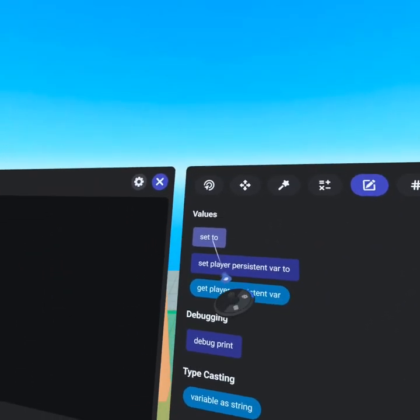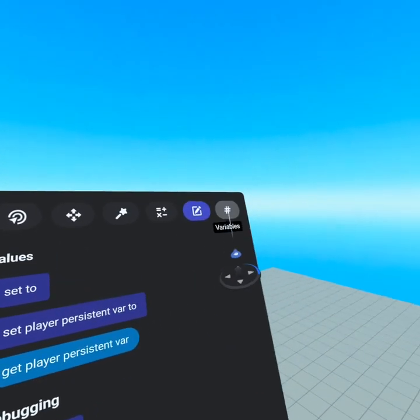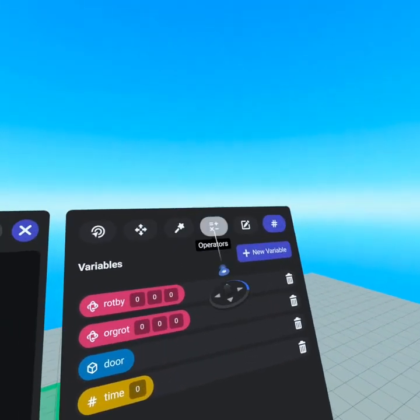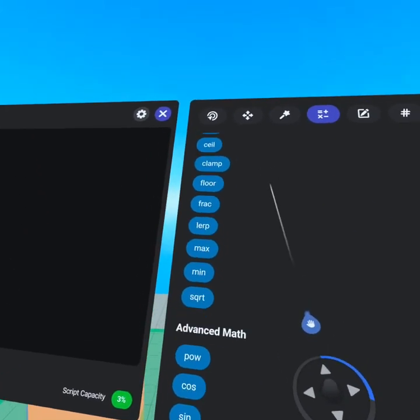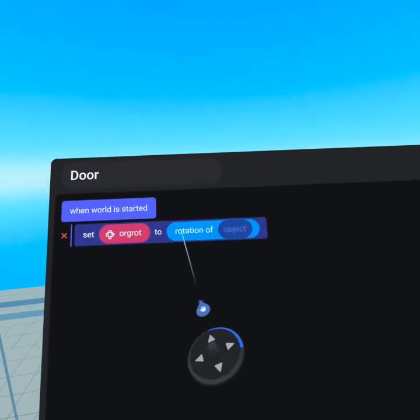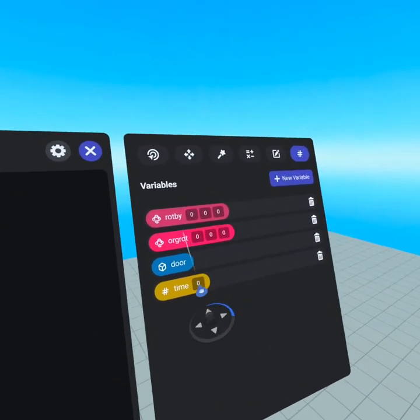We're going to our values tab, grab the set to, drag that over and grab our origin rotation. On world start we set the origin rotation, go to your operators tab, scroll down to objects and grab rotation of object, the rotation of the object door.